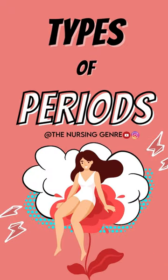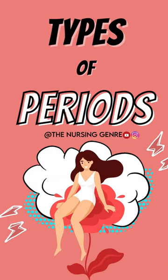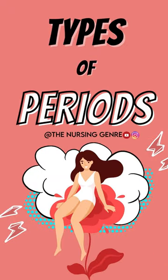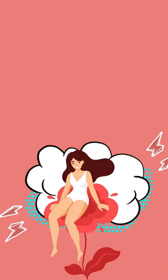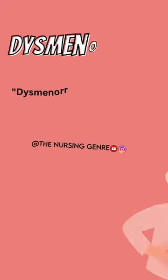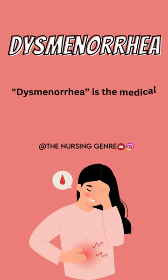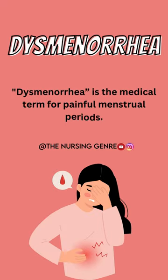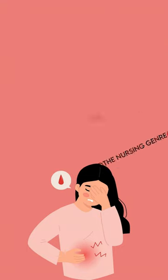In this video, we will talk about types of menstrual disorders. 1. Dysmenorrhea. Dysmenorrhea is usually pain in the lower abdomen.